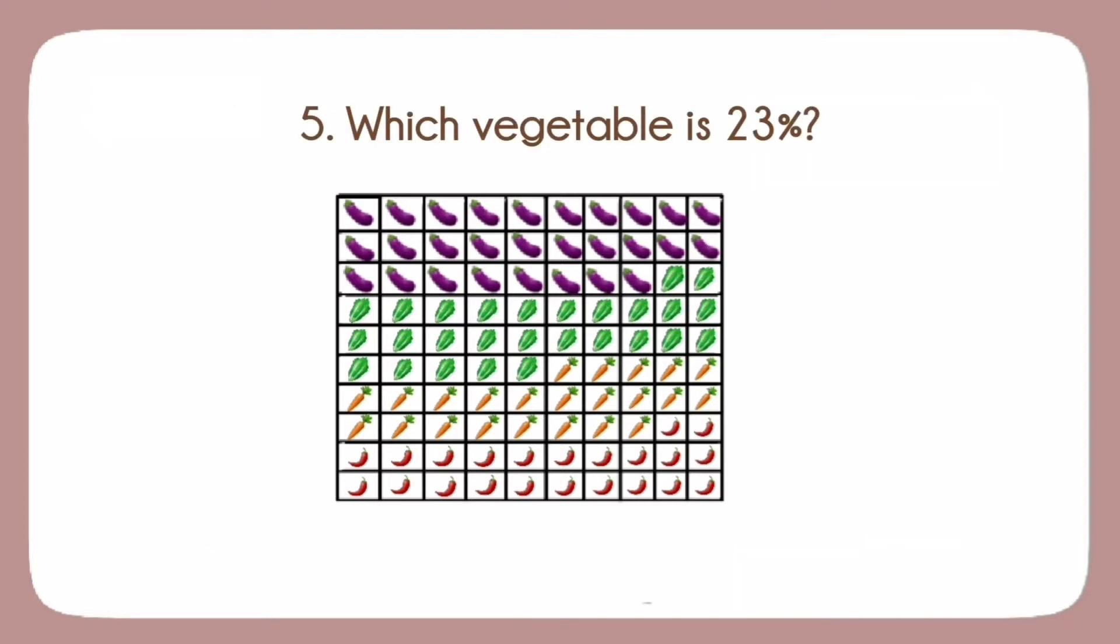5. Which vegetable is 23%? A. Eggplant. B. Cabbage. C. Pepper. D. Carrots.